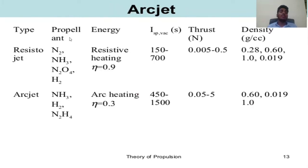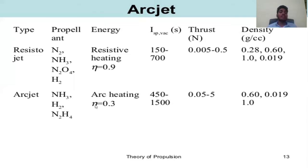Arc jet data table — types and propellants: for resistor jet, propellants are N2, H2, N2O4, H2 with resistive heating, efficiency (η) = 0.9, Isp_vac = 150 to 700s, thrust 0.005 to 0.5 N, density 0.28–0.60–0.19 g/cc. For arc jet, propellants are NH3, H2, N2H4 with arc heating, η = 0.3, Isp_vac = 450 to 1500s, thrust 0.05 to 5 N, density 0.60 to 0.0191 g/cc.